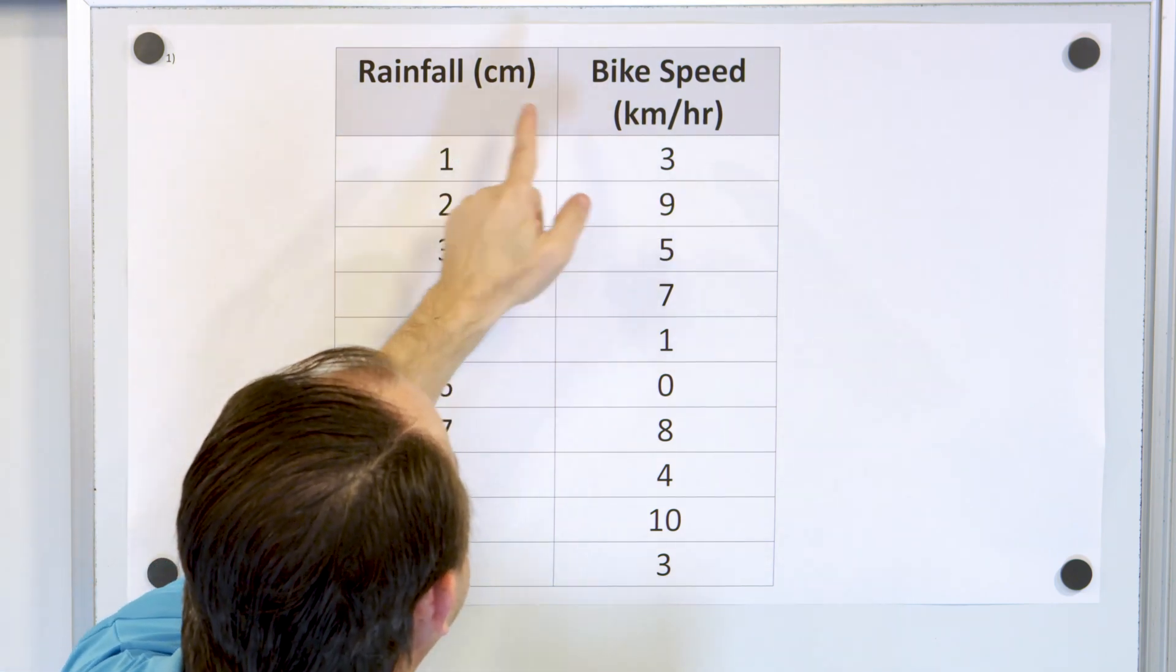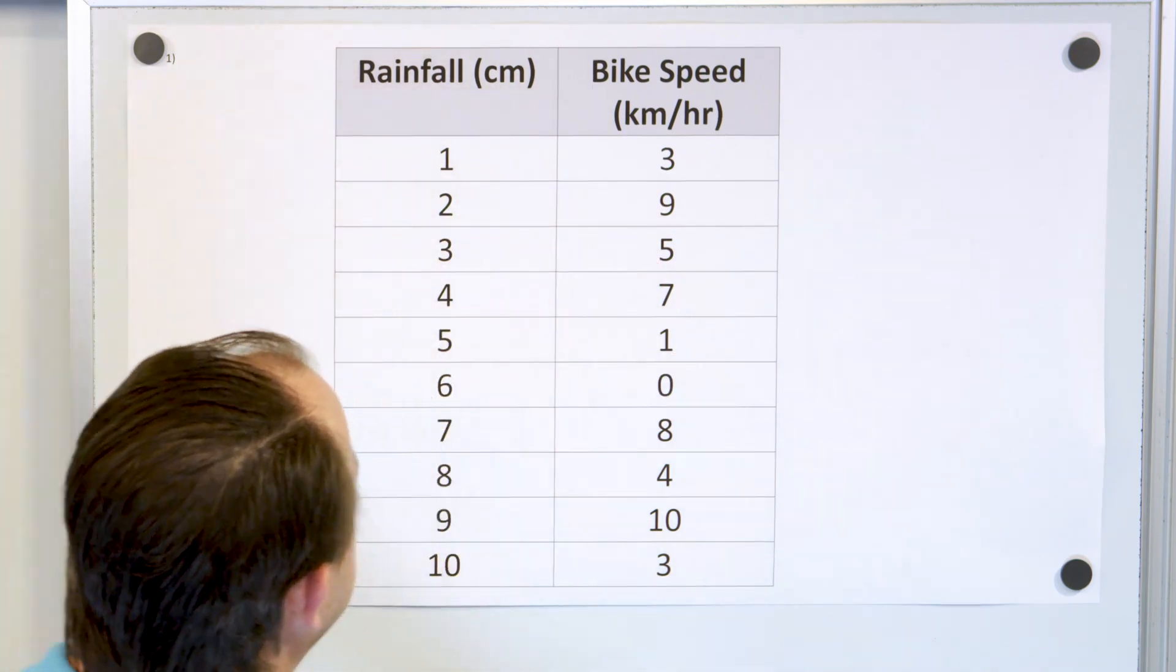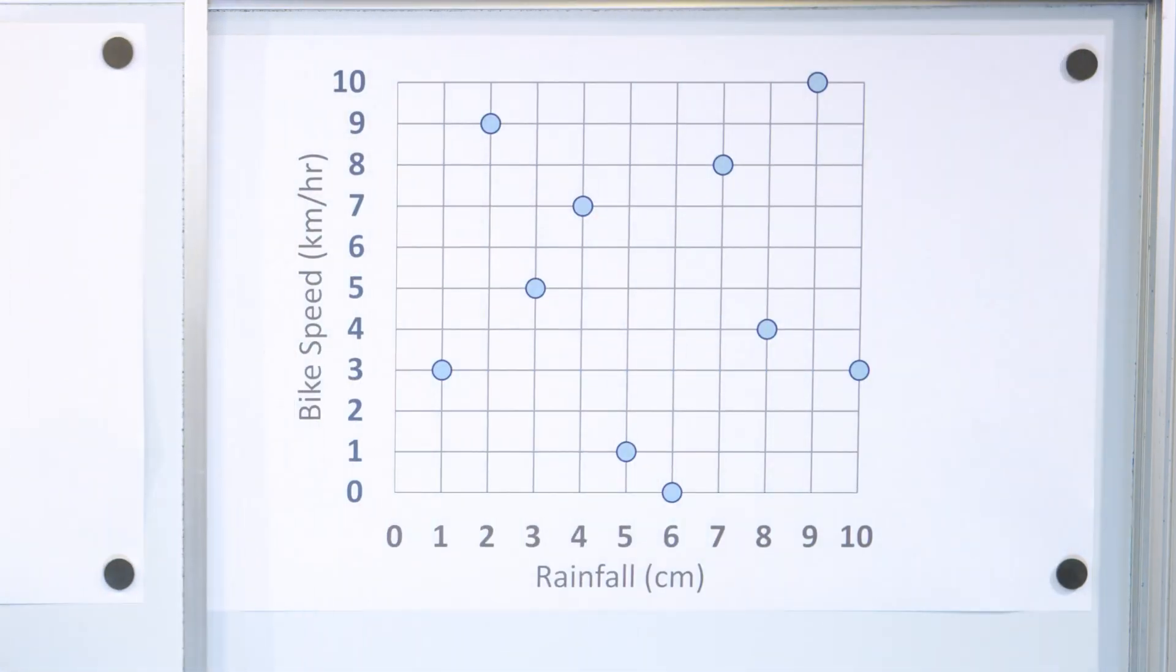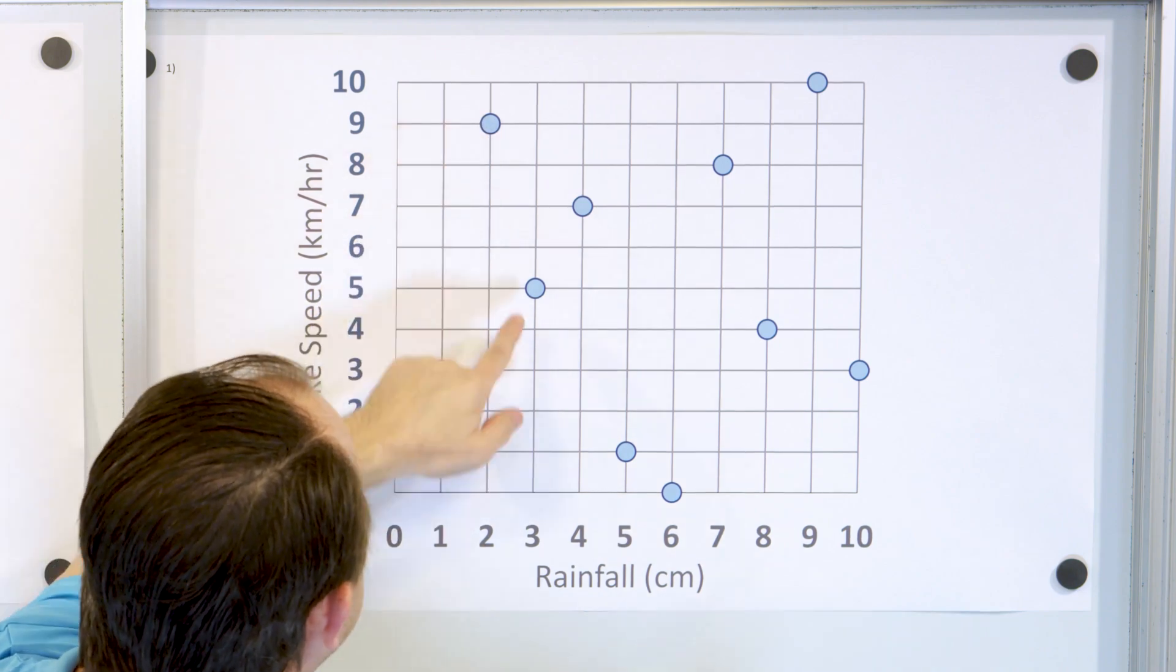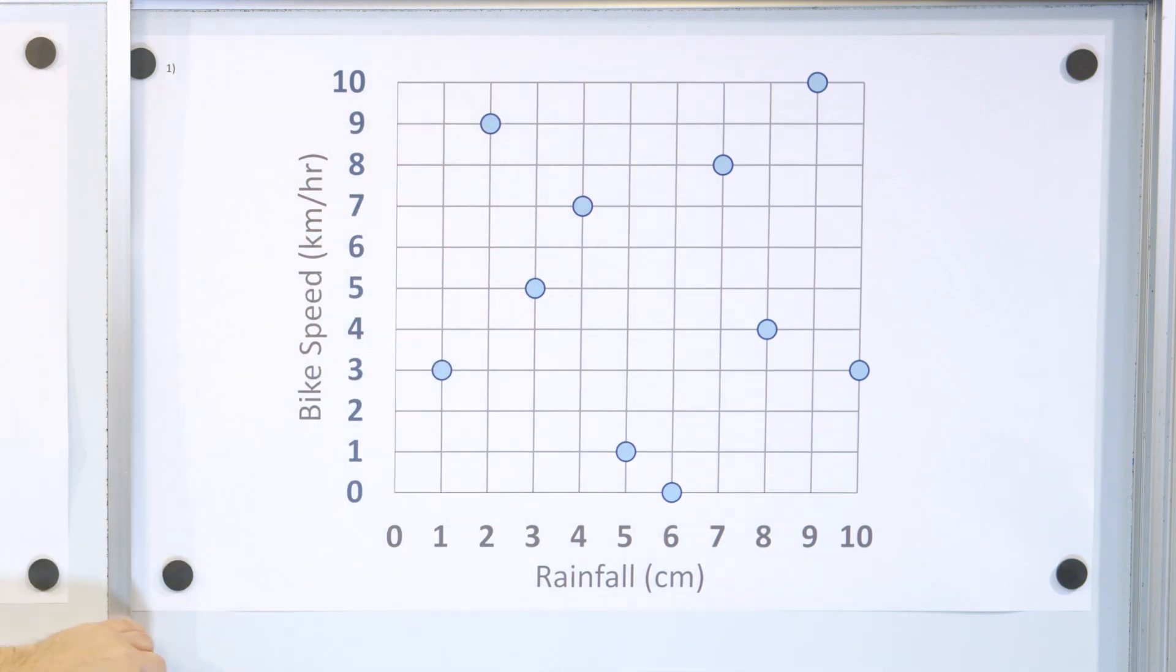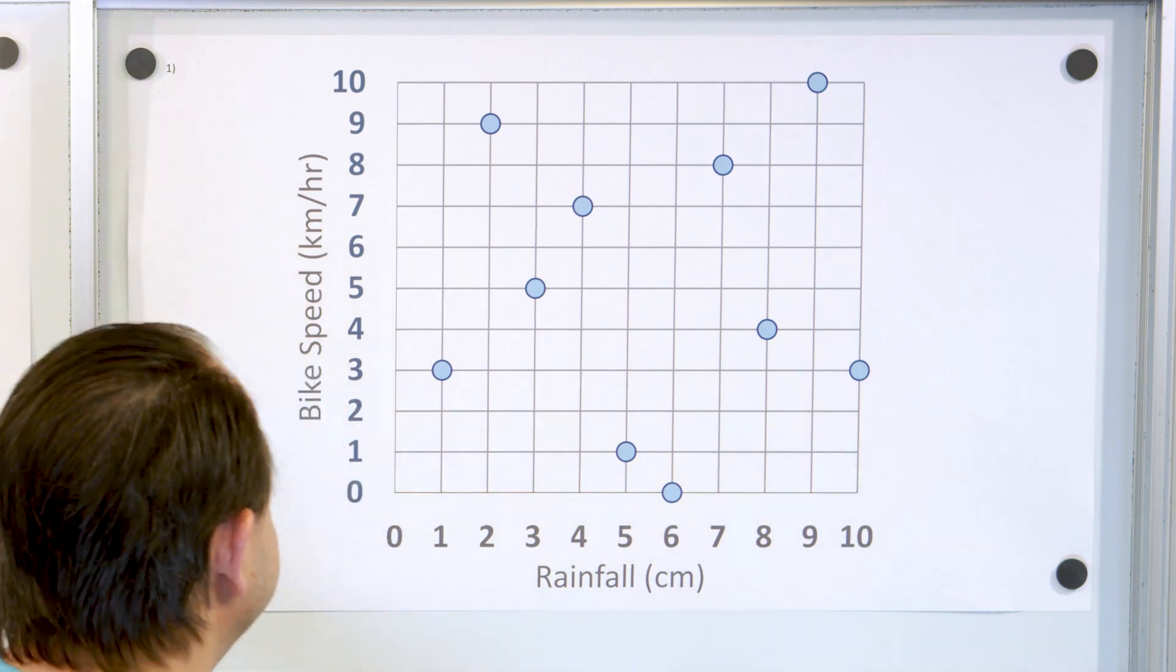We'll graph it. So one comma three, two comma nine, three comma five for the first three data points. One comma three, two comma nine, three comma five, and if I do the rest of the data points, you will get a scatter plot that looks like this.